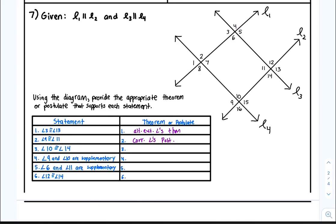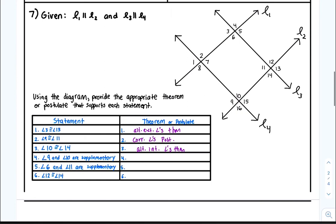Angles 10 and 14 — looking at the two parallel lines, these are both on the interior and congruent, so that's the alternate interior angles theorem, which states alternate interior angles are congruent. Angles 9 and 10 — they share a common side and a common vertex, so that's a linear pair, and the linear pair postulate says linear pairs are supplementary.